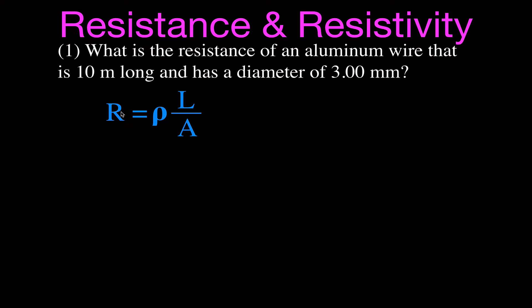The resistance is equal to rho — rho is the symbol for resistivity — times the length divided by the cross-sectional area. The resistivity of aluminum is 2.65 times 10 to the minus 8 ohm·meters — and note it's ohm·meters, not ohms per meter.